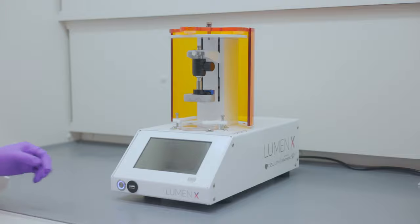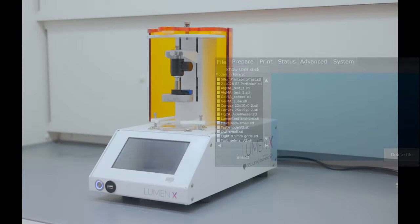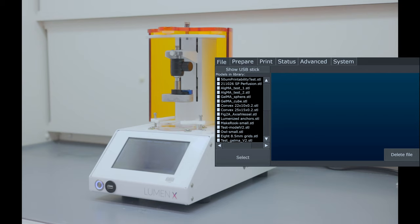Power on the printer by toggling the power switch twice. Once the printer boots up, we can see options on the touchscreen. We have different menus on the top and options here. First, we start with the file menu and proceed to the menus on the right.